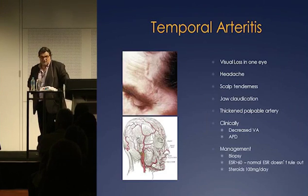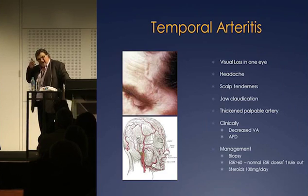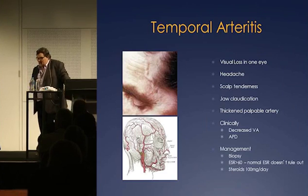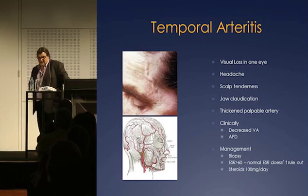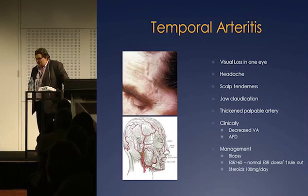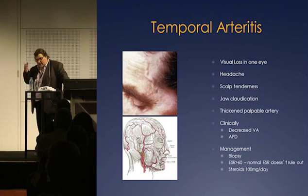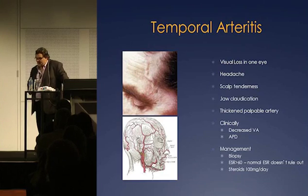Temporal arteritis — we mentioned it before during headaches. They'll get visual loss and pain over the temporal artery, which will be tortuous. They might get some jaw claudication and decreased visual acuity. Once you're getting down that road you might have missed the boat a little bit. They need biopsies and an ESR. You give 100 milligrams a day for seven to ten days, maybe two weeks, and they get better. Maybe.